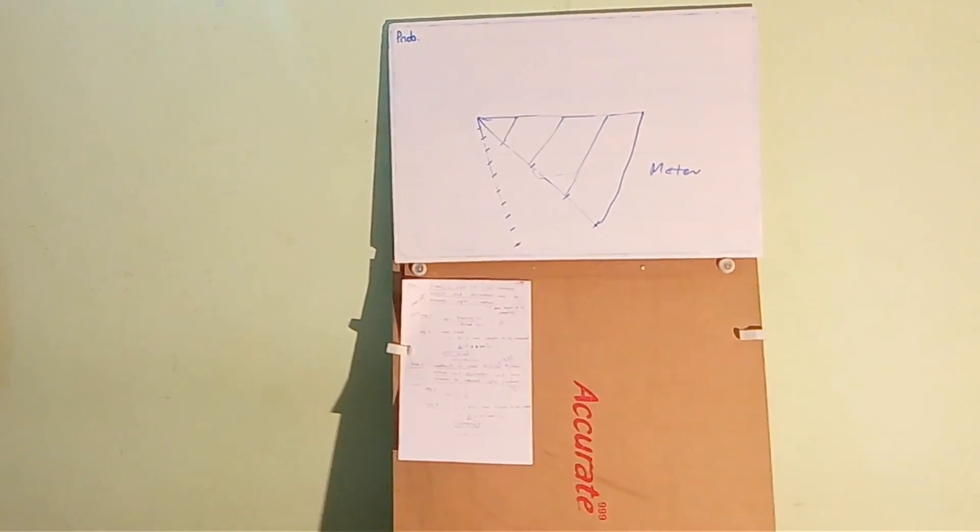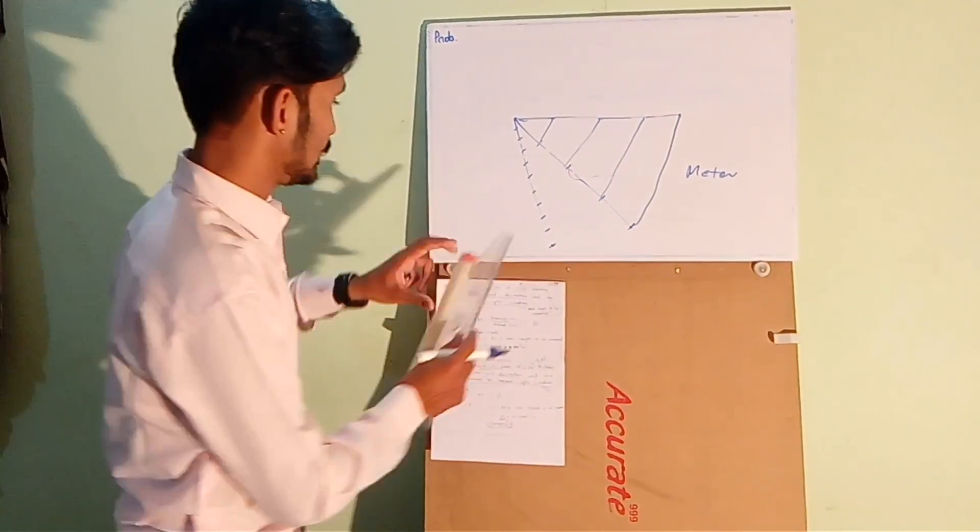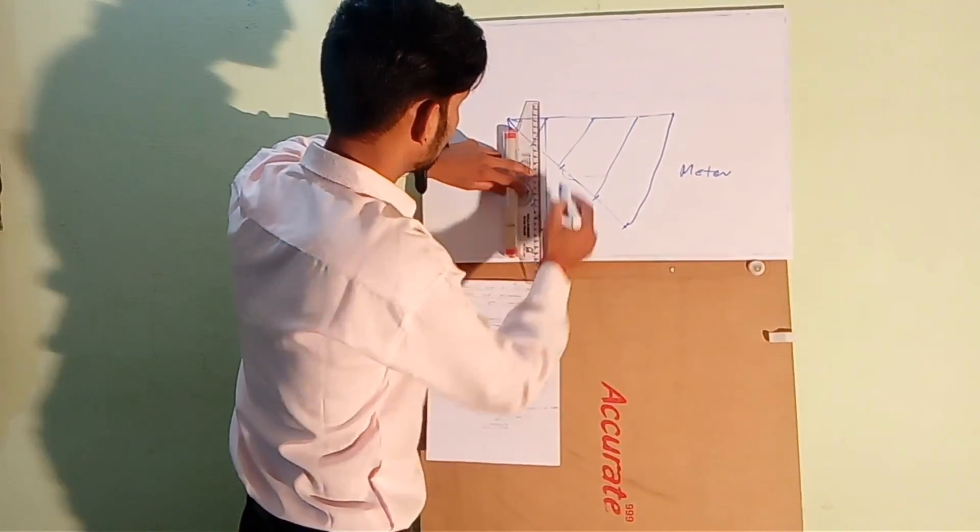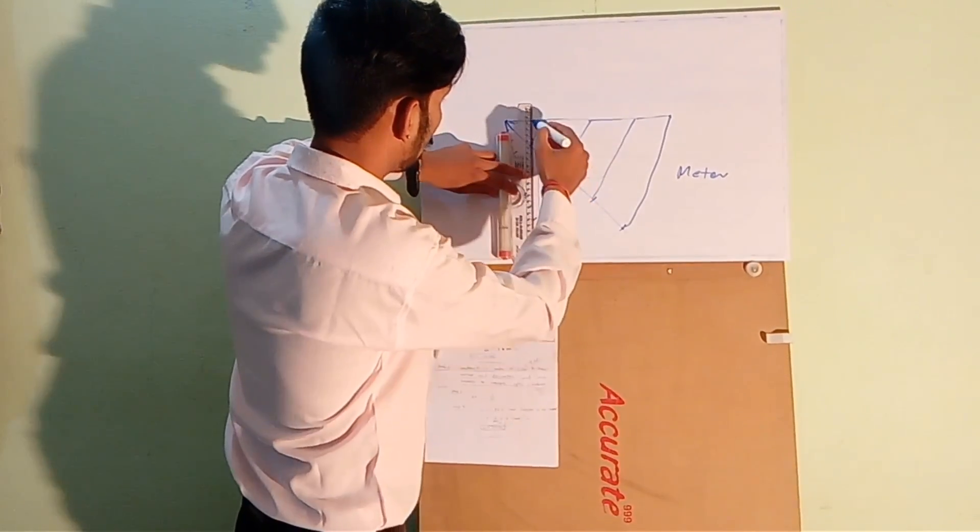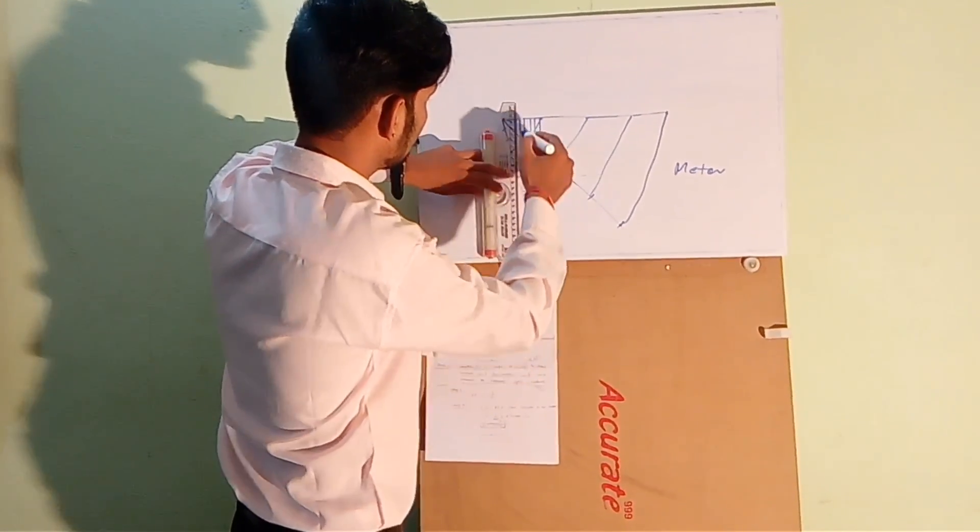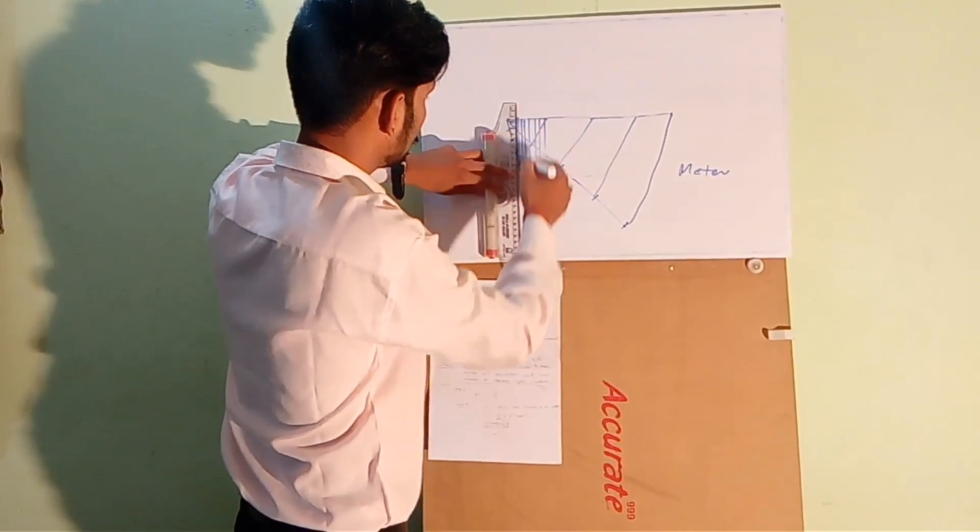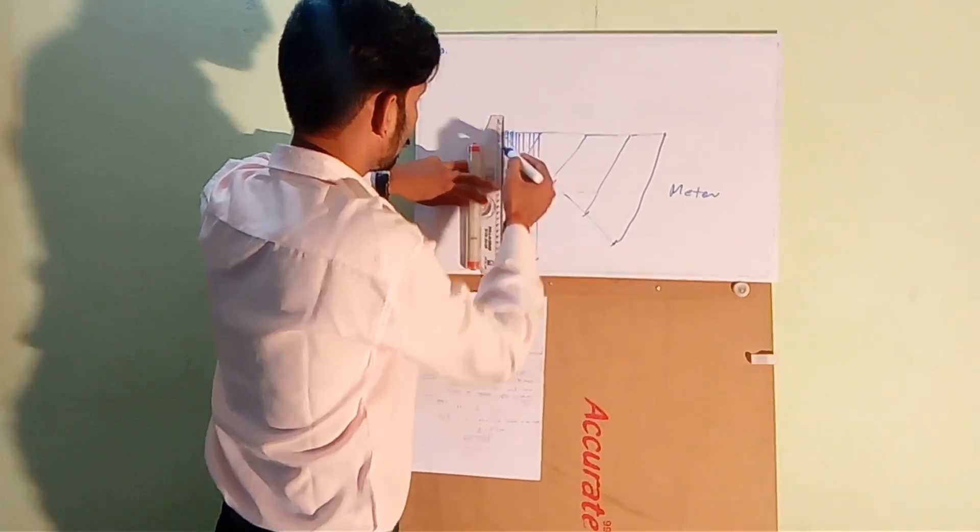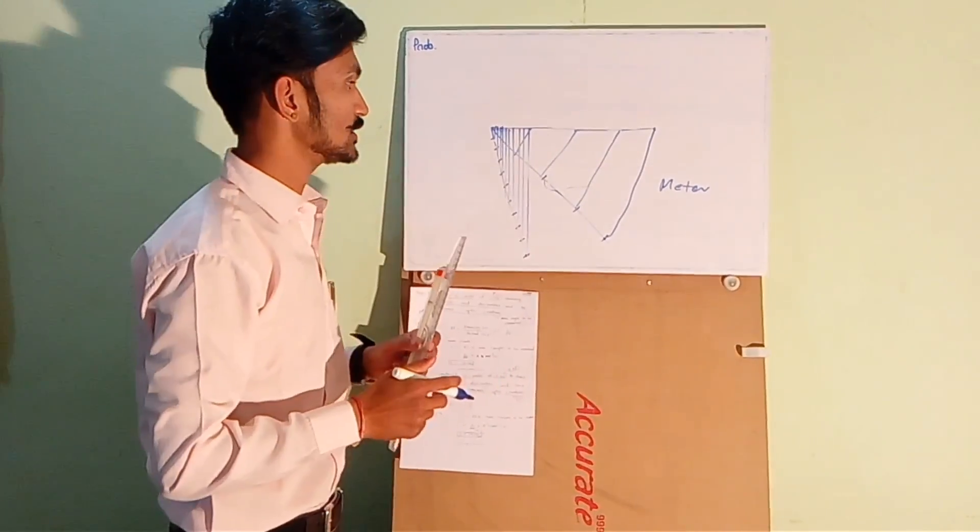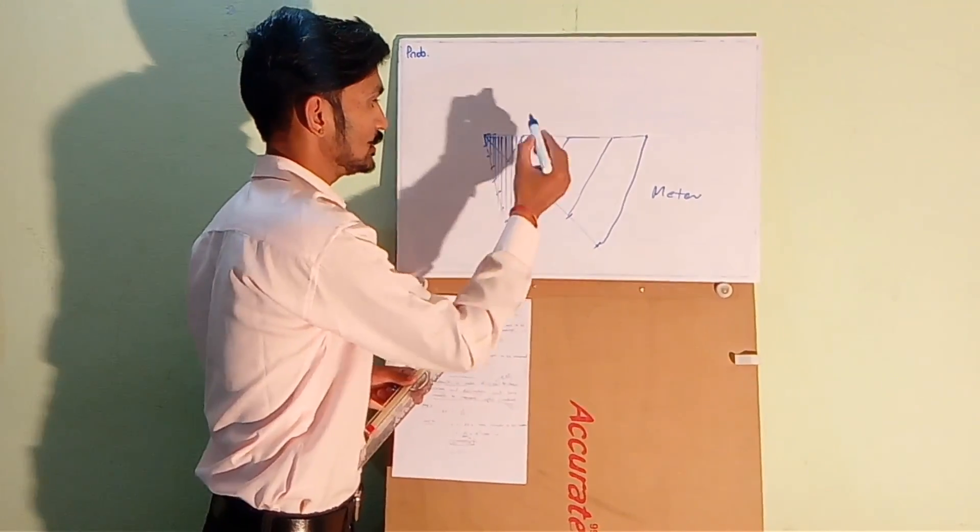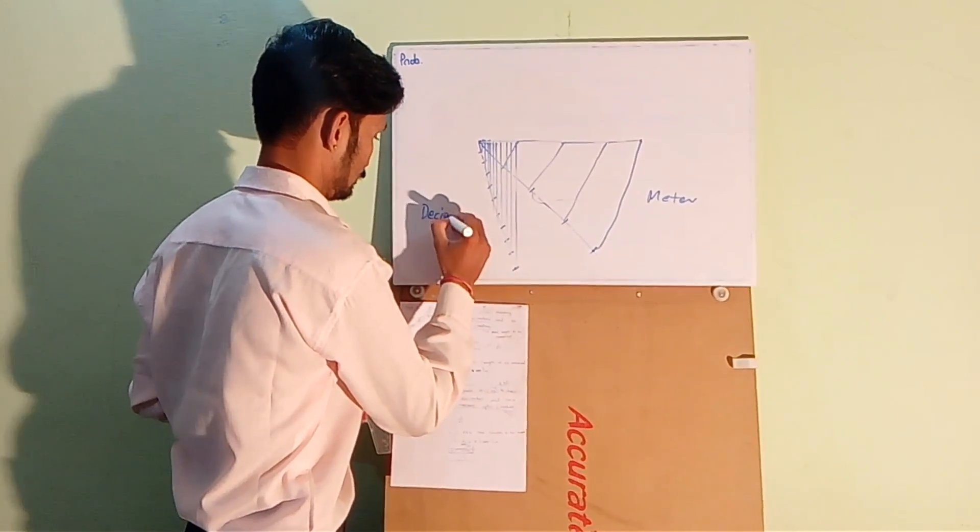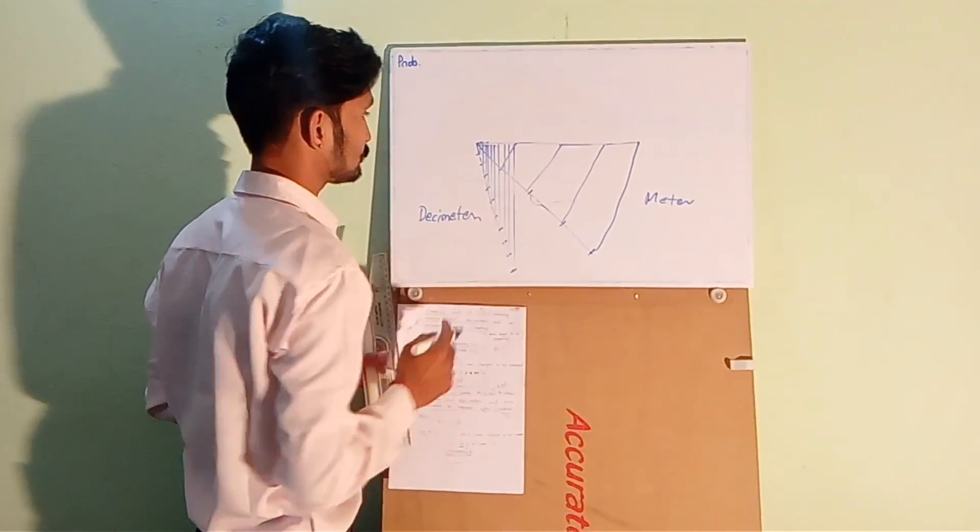Let me take my scale. Draw parallel lines from each point. So the small parts which are the subdivision of the first division are showing 1 decimeter.